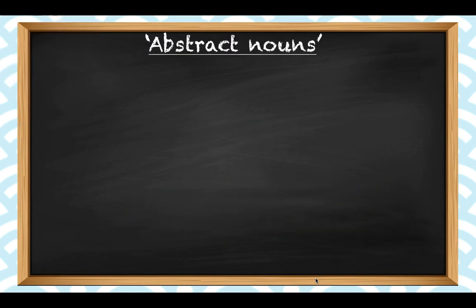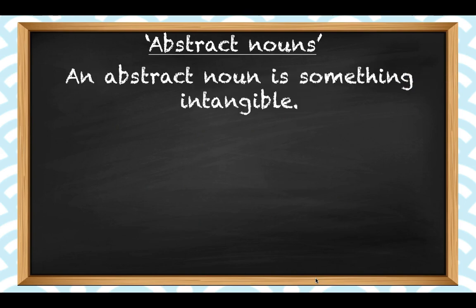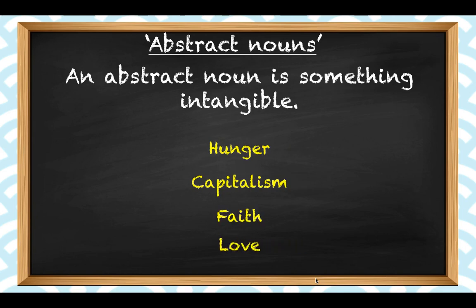An abstract noun is a thing that is intangible. It doesn't physically exist — you can't touch it or put it in a drawer — but it is still considered a thing. Some examples of abstract nouns are hunger, capitalism, faith, love. These are in contrast to concrete nouns, things we can touch and feel like a chair, a brush, or a tree.